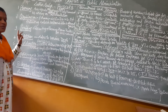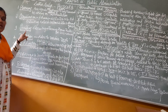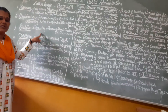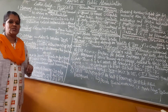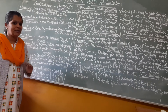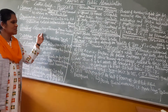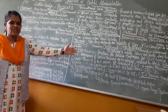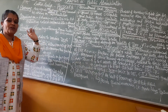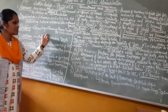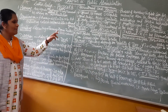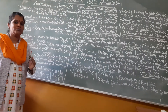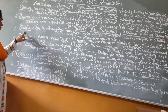The third letter in POSDCORB is staffing, which refers to recruitment — appointing officials. Those officials are then given different types of training. These officials are the civil servants, and they are trained mainly for framing rules and how to perform their functions.